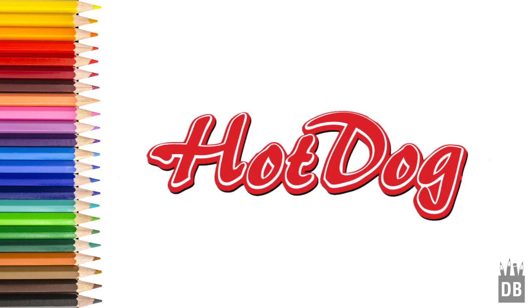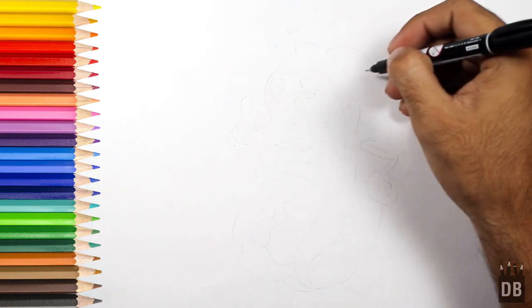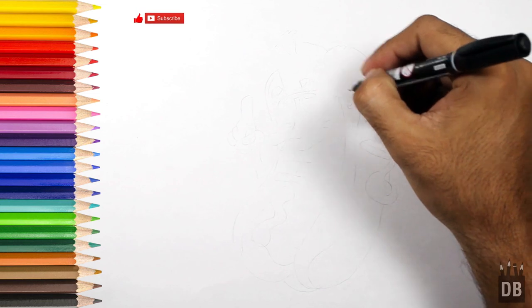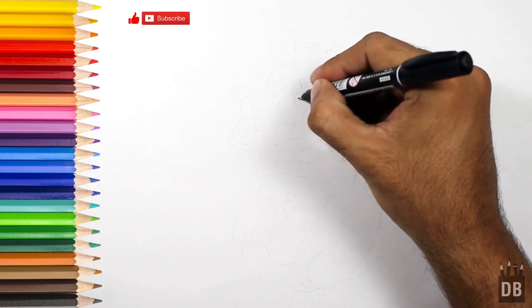Welcome to Drawing Box Studio and today we are going to make a hot dog. Let's draw this hot dog. It's not a normal hot dog, it's a fritter. Now we will start from the sunglasses.